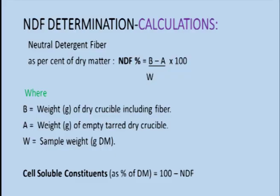For the calculation: NDF percent equals the weight of the dry crucible including fiber (the filtrate collected after filtration), minus A (the weight of the empty, tared crucible before adding the filtrate), divided by W (the weight of the sample, approximately 1 gram taken at the start), multiplied by 100. Cell soluble contents can then be calculated by simply subtracting the NDF value from 100, giving the amount of cell soluble constituents.